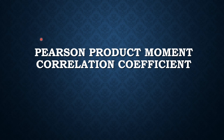To determine the strength of the linear relationship between two variables, statisticians use a measure called the correlation coefficient. There are several types of correlation coefficients, but in this video we will focus on the Pearson product-moment correlation coefficient, which is named after the famous statistician Carl Pearson.